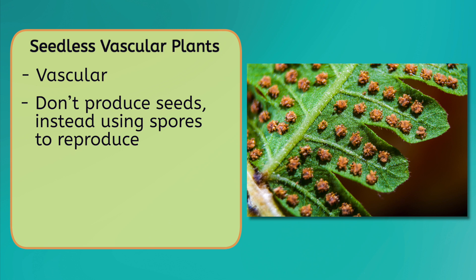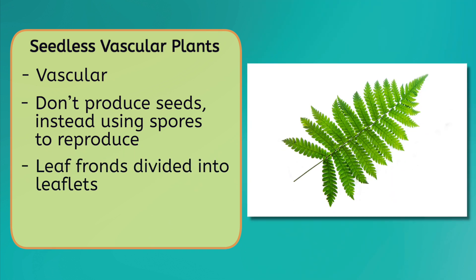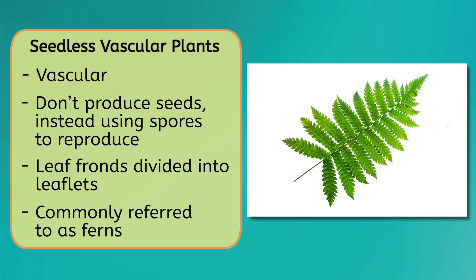In addition to releasing spores, these leaves are unique in that they have fronds divided into leaflets. You can think of these leaves as big leaves made out of smaller leaves connected together. This gives seedless vascular plants, commonly referred to as ferns, a signature look that makes them easy to recognize.